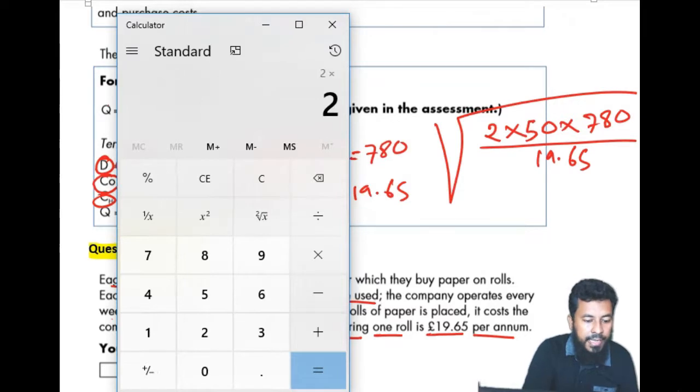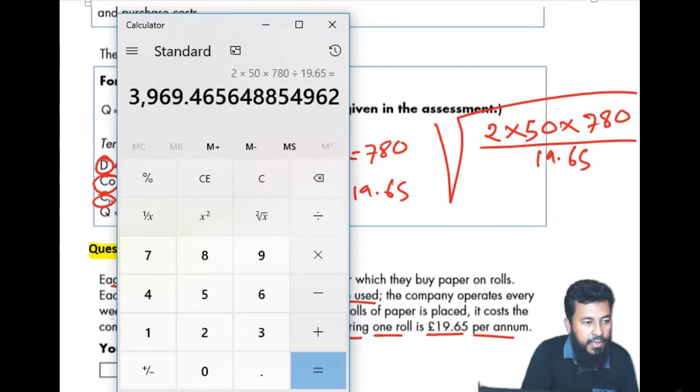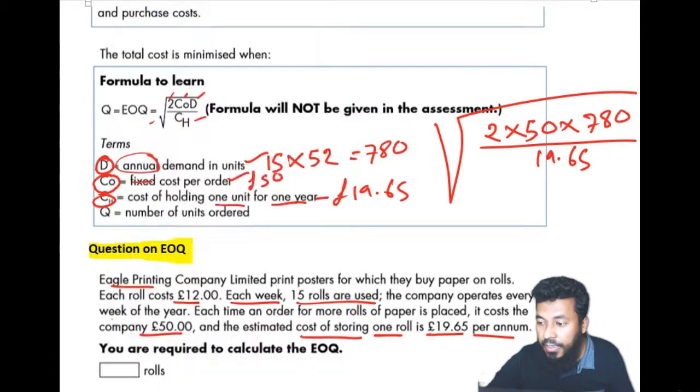2 times by 50 times by 780 divided by, it gives you 78,000 divided by 19.65. And then you need to do a root over. 63. Got the answer here.